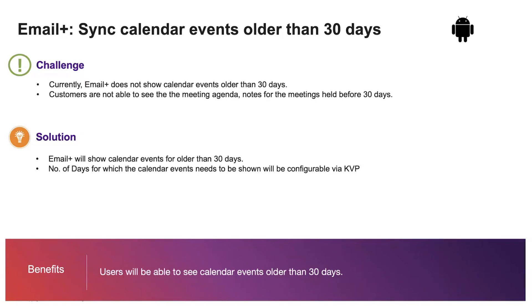On the Android side, we are coming up with a feature. Currently, most of you know you can see events only for the last 30 days in Email Plus Calendar. We are coming up with a feature which will allow you to see events older than 30 days. This feature is configurable via KBP, so if you'd like your users to see events older than 30 days, you can enable it and they will be able to see those events.